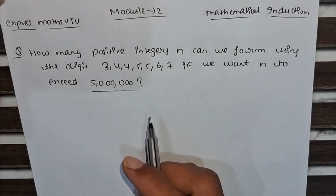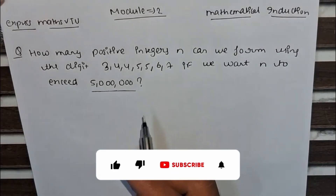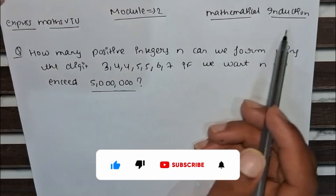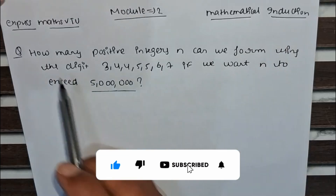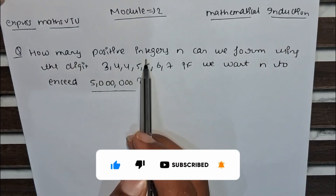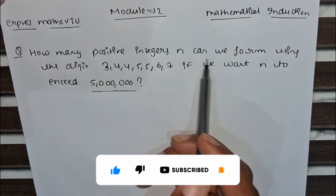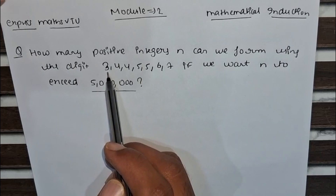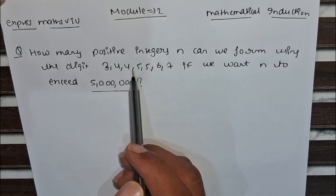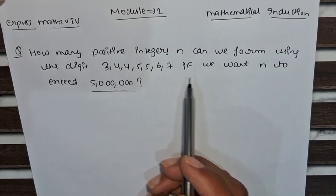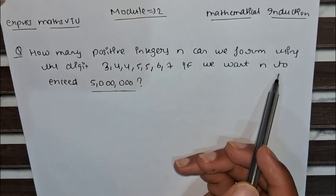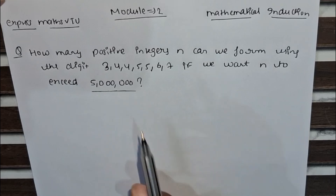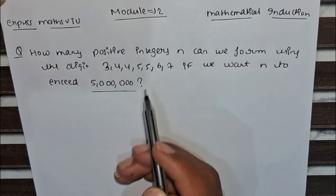Hello everyone, today we are going to solve another important problem from Module 2: Mathematical Induction. The problem is: how many positive integers n can be formed using the digits 3, 4, 4, 5, 5, 6, 7, if we want n to exceed 50 lakh (5,000,000)?